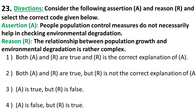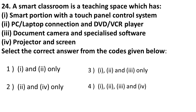Next is an assertion-reason question. Assertion: population control measures do not necessarily help in checking environmental degradation. This is correct — there is no direct impact between population control measures and environmental degradation. Reason: the relationship between population growth and environmental degradation is rather complex. This is also correct. So both A and R are true and R is the correct explanation of A.